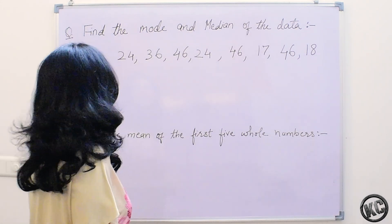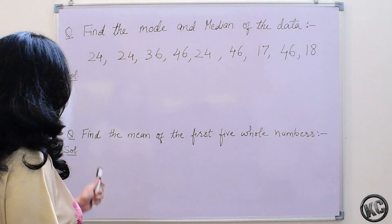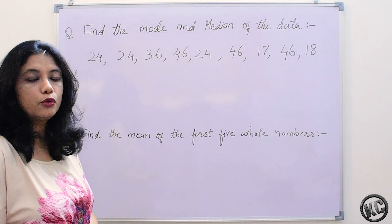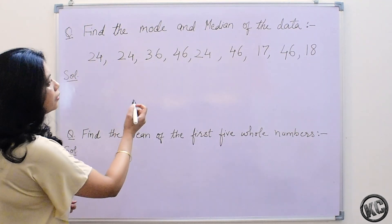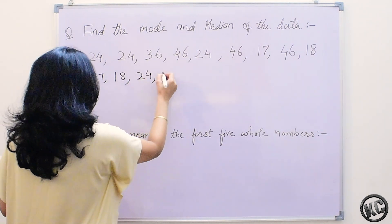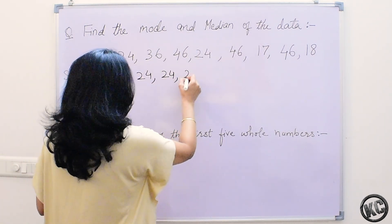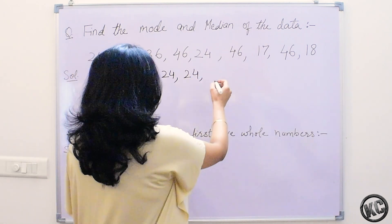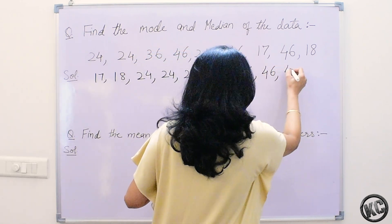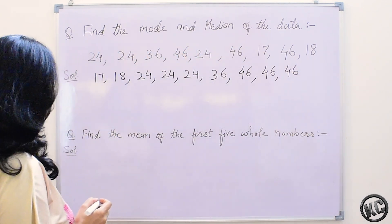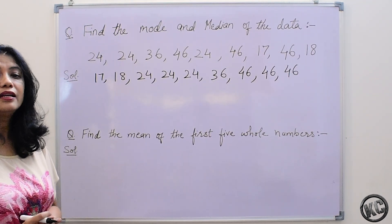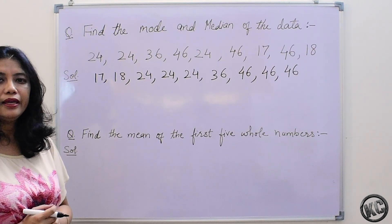Now let us solve these sums. Find the mode and median of the data. We are given this data and we have to find the mode and median. First and foremost we will arrange this data in increasing order. The lowest number is 17, then 18, then 24, 24, 24, then 36, then 46. We have arranged our data in increasing order. It is very necessary to arrange the data in increasing order when finding mode and median.